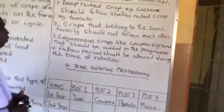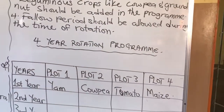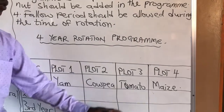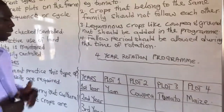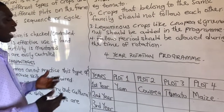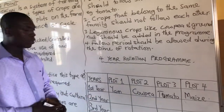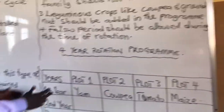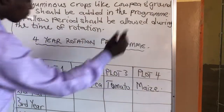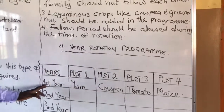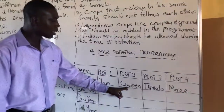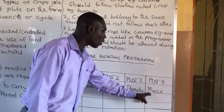Now let's quickly look at a four-year crop rotation program for the following crops: yam, cowpea, tomato, and maize. We have our farm divided into four plots — plot one, plot two, plot three, and plot four. In the first year, plot one is planted with yam, plot two with cowpea, plot three with tomato, and plot four with maize.